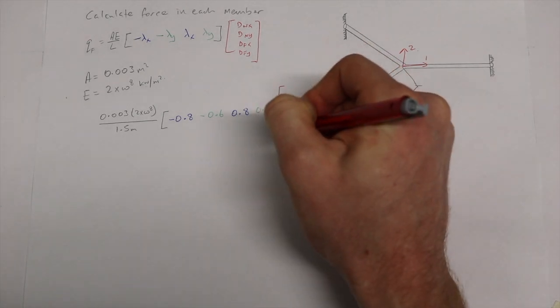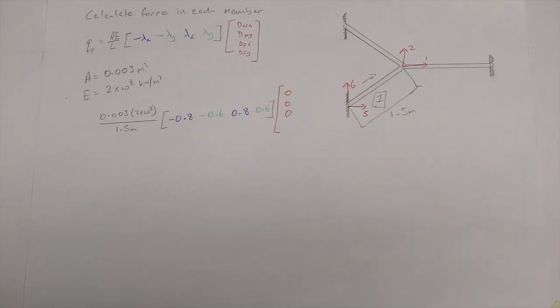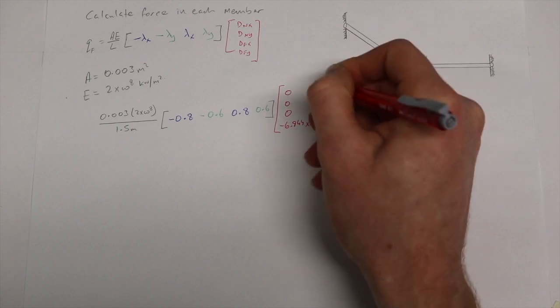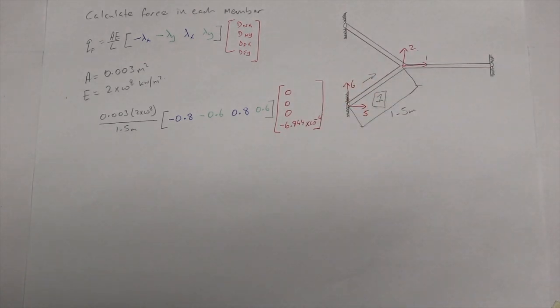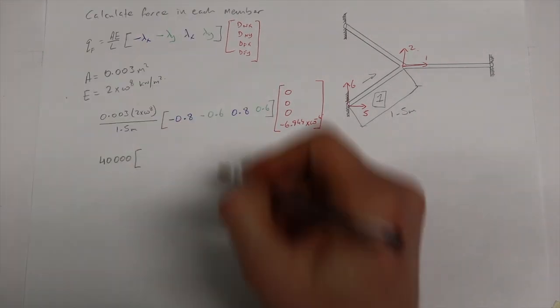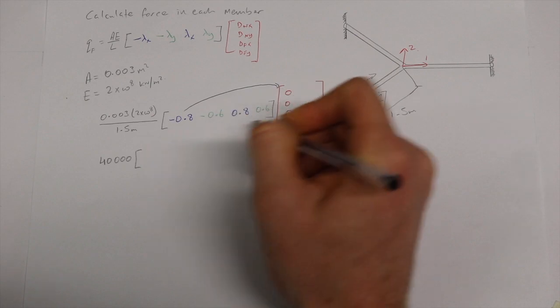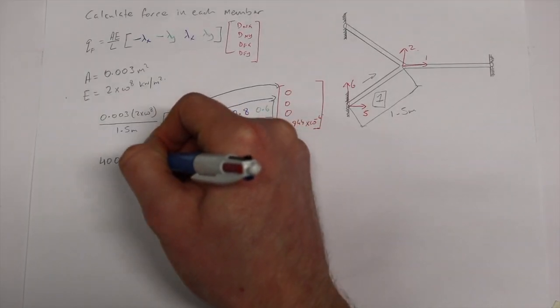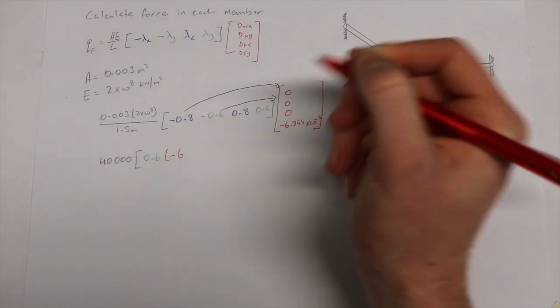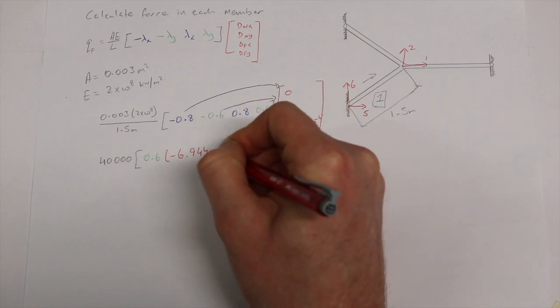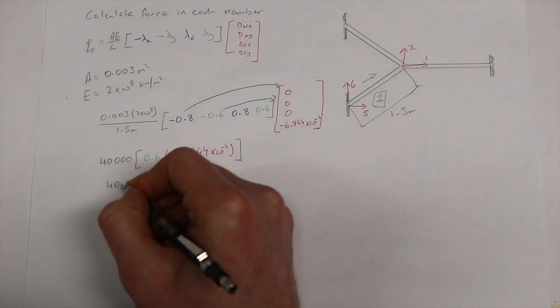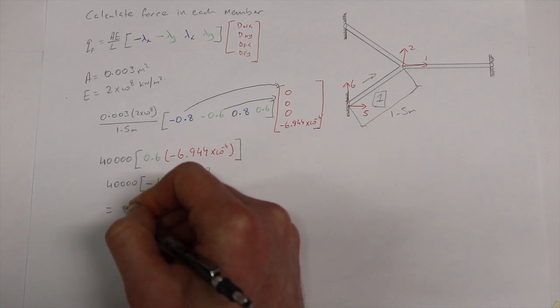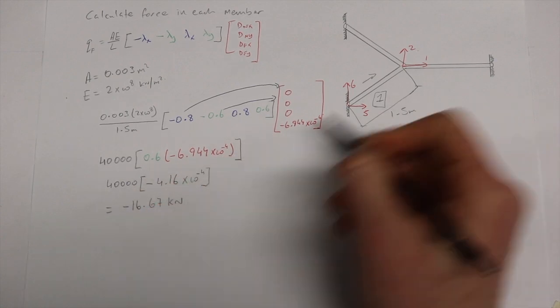0, 0, 0 are the first 3 degrees of freedom for 5, 6 and 1. And the displacement at the far y, which is degree of freedom 2, is minus 6.944 by 10 to the minus 4 meters. Calculating this out we get 40,000 by our lambda x, our lambda y and our lambda x which are all by 0. Therefore our lambda y, our last lambda y, 0.6 is multiplied by minus 6.944 by 10 to the minus 4. This gives us a value of minus 16.67 kilonewtons and this is in compression.